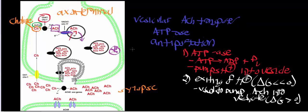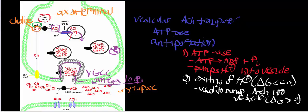Now you have a vesicle filled with acetylcholine molecules. The vesicle eventually makes its way down to the axon terminal that borders the synapse. Through the action of a voltage-gated calcium channel, the vesicle fuses with the membrane of the axon, forming what we call an omega loop. That creates a space through which the acetylcholine can exit the axoplasm and go into the synapse.